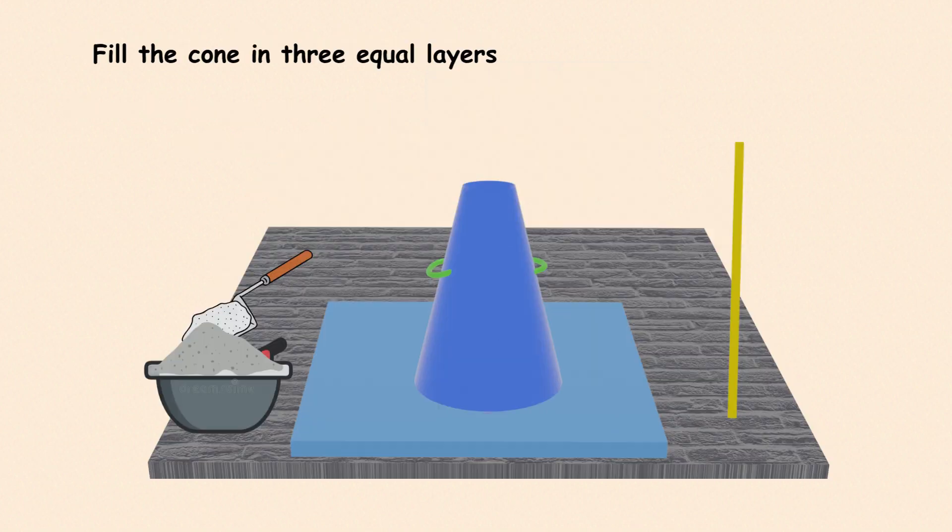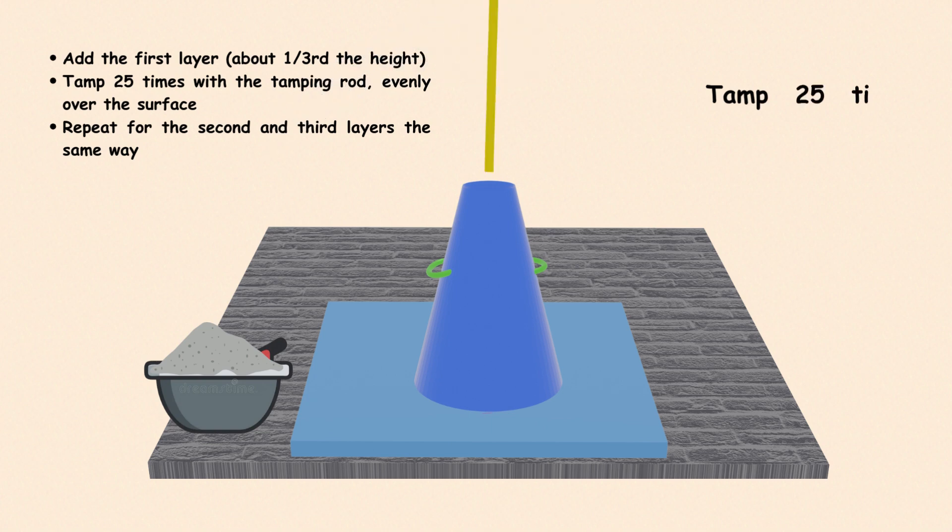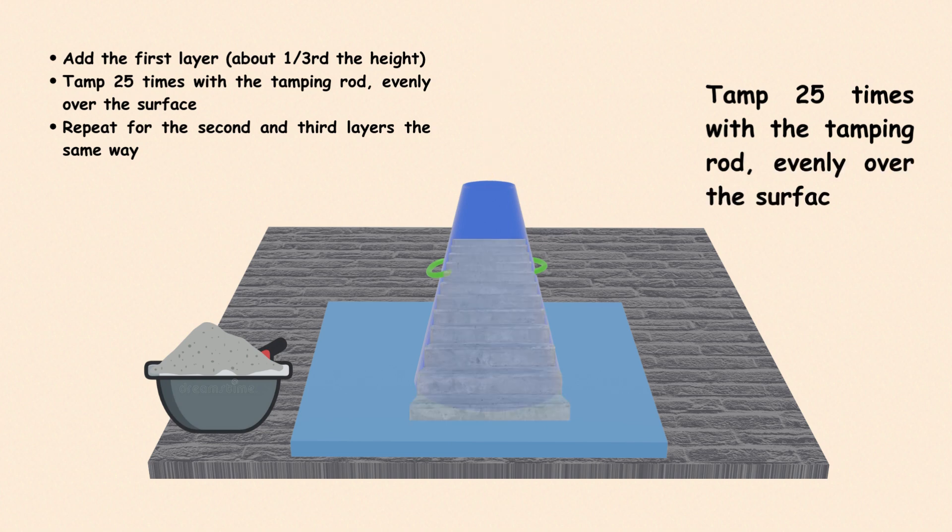Step 2. Fill the cone in three equal layers. After adding each layer, tamp the concrete 25 times using the tamping rod. Make sure to distribute the strokes evenly over the surface.